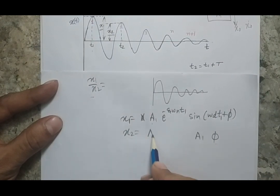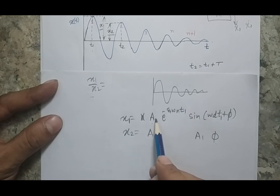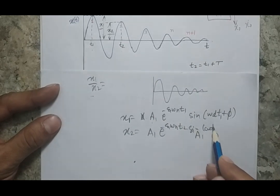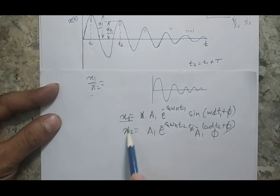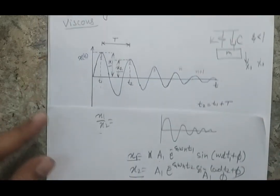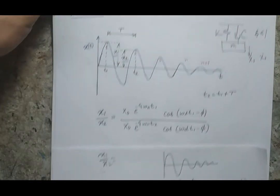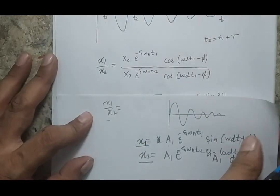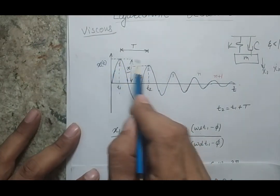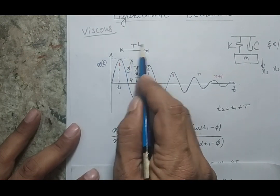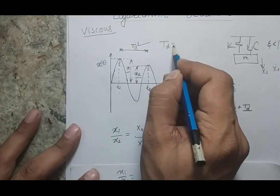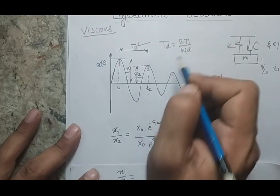For x2, a1 will not change because it is not dependent on time — it is the amplitude constant. So x2 = a1 · e^(−ζωₙt2) · sin(ωd·t2 + φ). When I take the ratio of these two terms — you can use either the sine or cosine term — I know that the two successive peaks are separated by the damped time period. So t2 = t1 + Td, where Td is the damped time period.